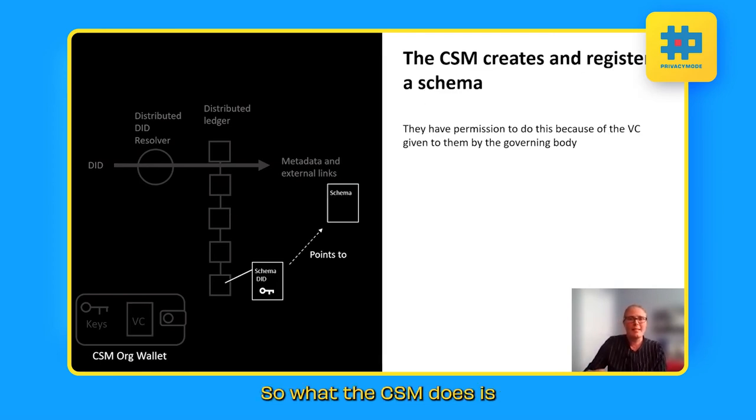So what the CSM does is they are going to, because they have the permission for it, they're going to write a schema and then they're going to create a decentralized identifier that points to that schema. And they're going to publish that on the, they're going to publish their DID document and they're going to sign it with their private cryptographic key.